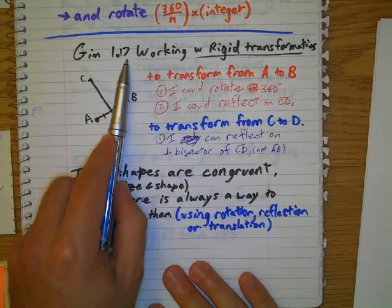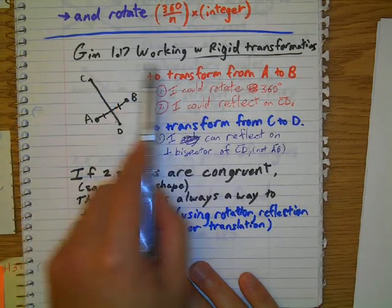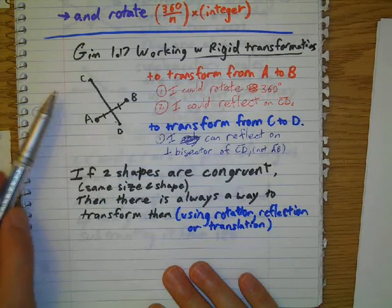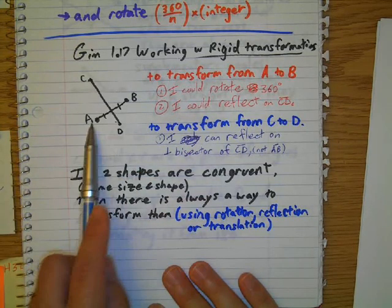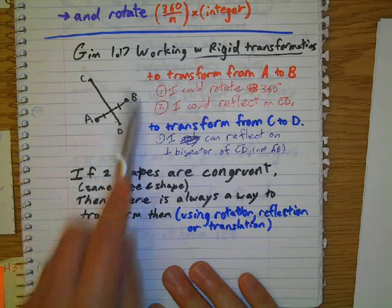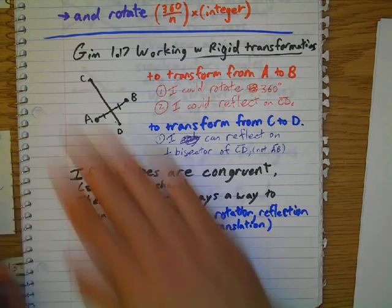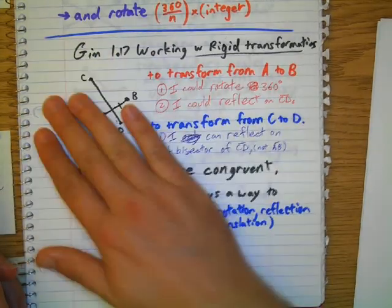Okay. GIM Unit 1 Chapter 17. Working with rigid transformation. So to get from point A to point B, I could rotate it 360. I could also reflect it on this line.